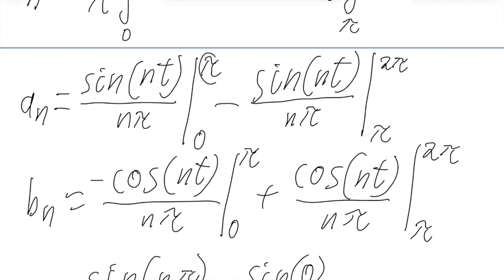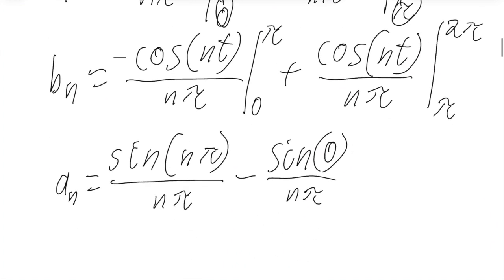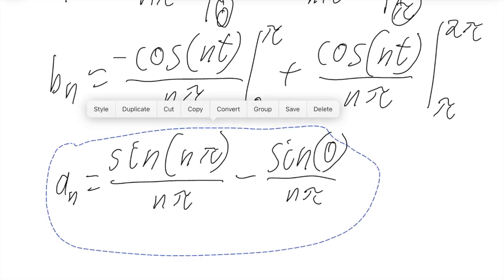And notice that here, there are all multiples of π or 0. So a_n will always be 0. And there are just no cosines in our expansion. So we can safely get rid of this.